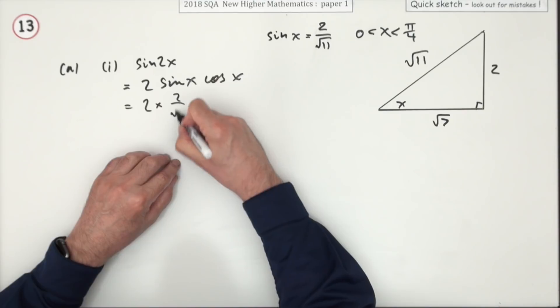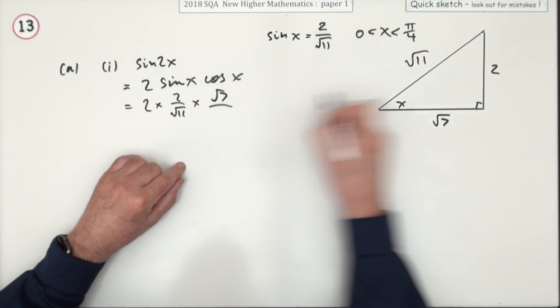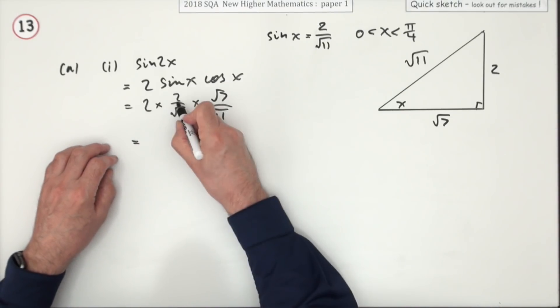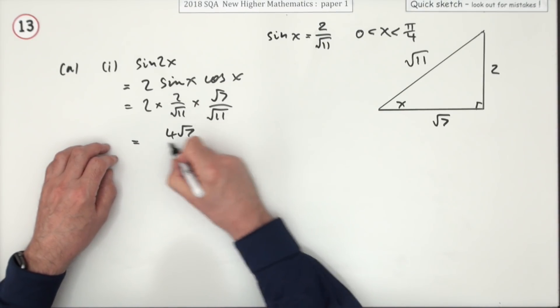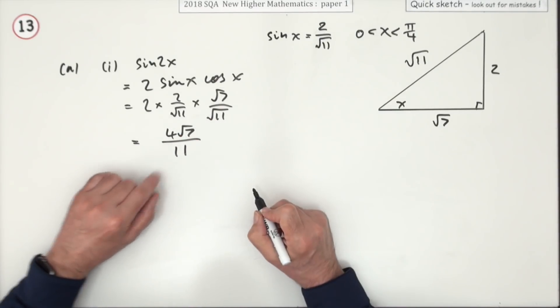Sine of x is 2 over root 11, cos of x is root 7 over root 11, which means you've got 2 times 2 is 4 root 7 on top, and root 11 times root 11 reconstitutes the 11.